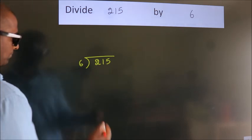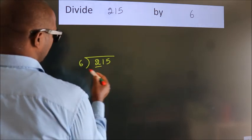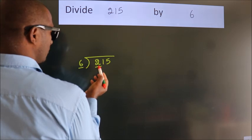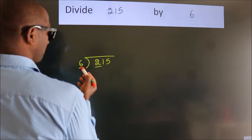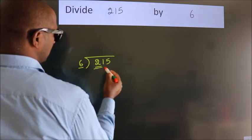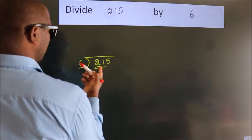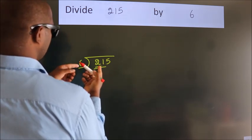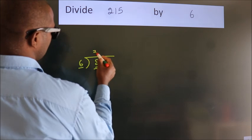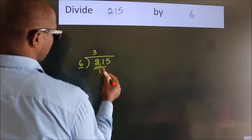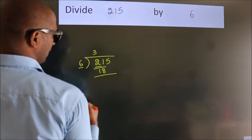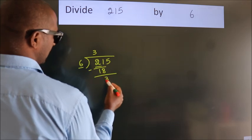Next. Here we have 2. Here 6. 2 smaller than 6, so we should take 2 numbers. 21. A number close to 21 in 6 table is 6 threes 18. Now we should subtract. We get 3.